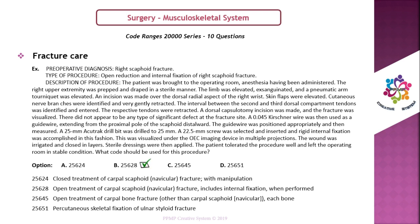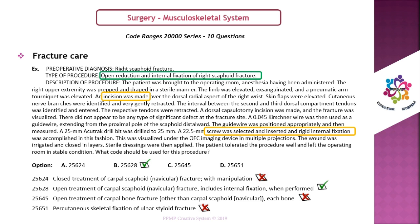Let's see an example. The answer is option B. In this template, you do not need to read the complete question — directly read the type of procedure. Here the procedure is open reduction and internal fixation of right scaphoid fracture, so it means open treatment. We can eliminate options A and D based on open treatment, and eliminate option C based on the fracture site. Based on these two terms we can confirm it as open treatment, because incision means opening a wound.